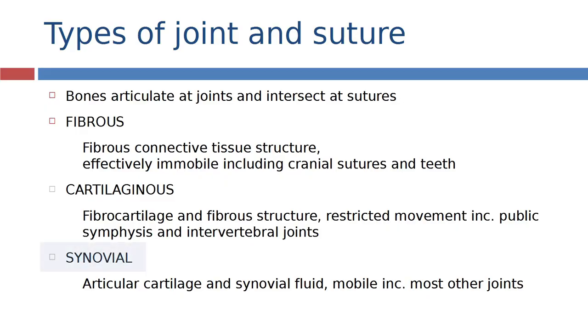And then finally, the joints you might be more familiar with, things like the hip joint, the shoulder joint, are what we call synovial joints. They have a complex system of articular cartilage and synovial fluid which lubricates and facilitates movement within the joint and they are the most mobile of all the joints.